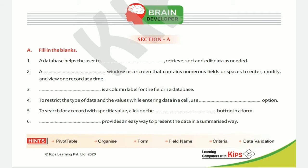Fifth: to search for a record with a specific value, click on the dash button in a form. The answer is the Criteria button. To search for a record with a specific value, click on the Criteria button in a form. Sixth: dash provides an easy way to present the data in a summarized way. That is Pivot Table. Pivot Table provides an easy way to present the data in a summarized way.